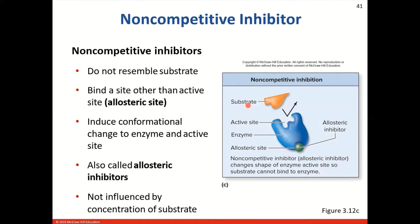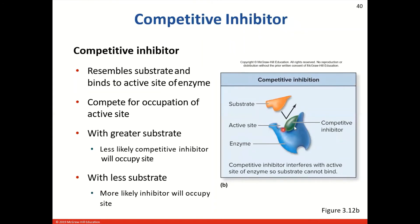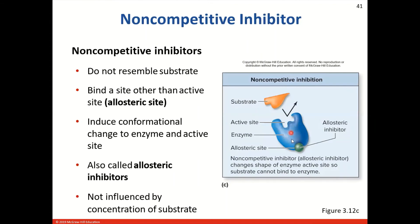Noncompetitive inhibitors do not actually resemble the substrate. Instead, they bind to a site other than the active site, called an allosteric site. The allosteric inhibitor comes in and binds at the allosteric site location. What then occurs is that we get some sort of conformational change to this particular enzyme. You'll notice the substrate is the same one from the competitive inhibitor example, and this is what the active site is supposed to look like. When the allosteric inhibitor binds to the allosteric site, it causes the active site to change shape, and now the original substrate is no longer able to fit or bind to that particular active site.